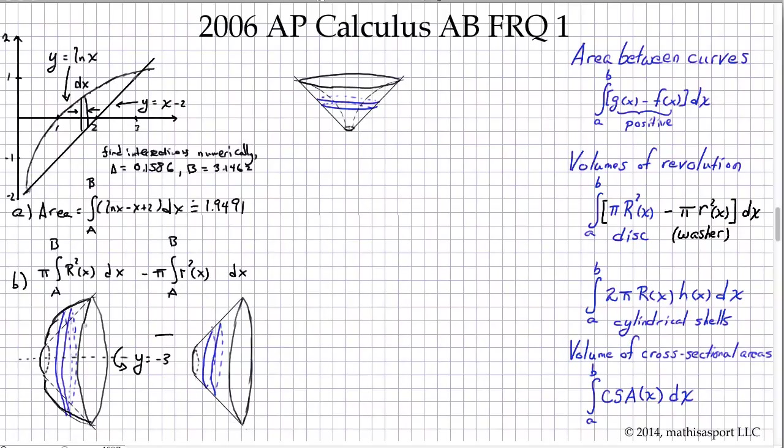This line y equals negative 3, the outer radius has to be this distance here. What is capital R of x? It's going to be the ln x function minus negative 3, so that's ln x plus 3. What is this little r function going to be? It's the inner line minus y equals negative 3, so in this case it'll be x minus 2 minus negative 3, which is x minus 2 plus 3 or x plus 1.